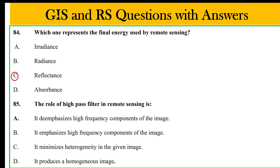The role of the high-pass filter in remote sensing is: A. it emphasizes high frequency components of the image, B. it emphasizes high frequency components of the image, C. it minimizes heterogeneity in a given image, D. it produces a homogeneous image. The answer is: it emphasizes high frequency components of the image.